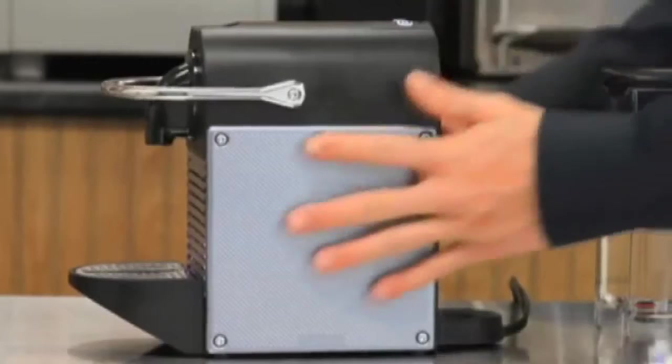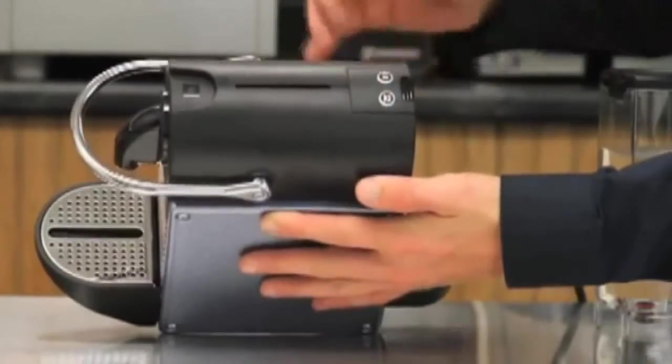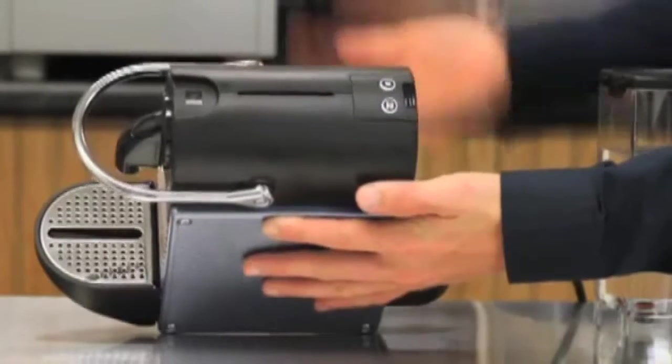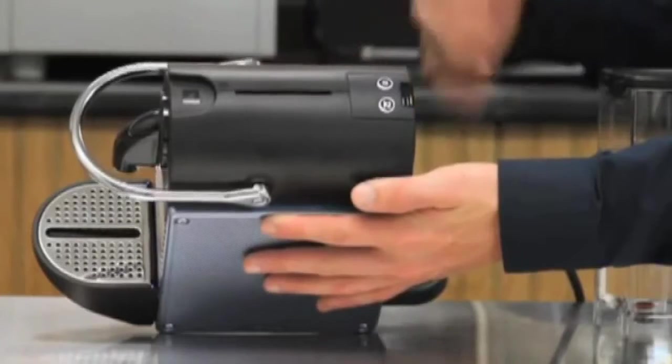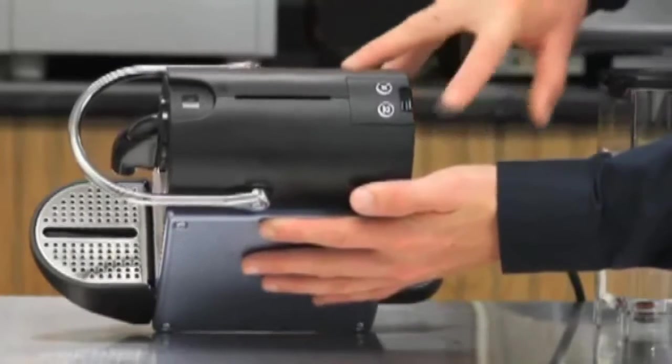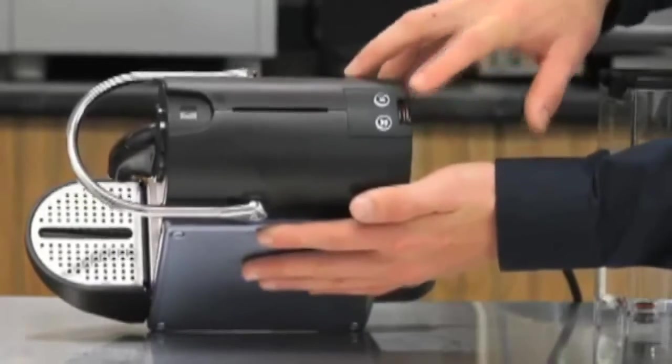On the top of the machine, you have your two buttons: short and long. You can brew a short shot, a single shot, or a double shot, and both buttons are completely programmable so you can set them to brew the desired amount that you want.